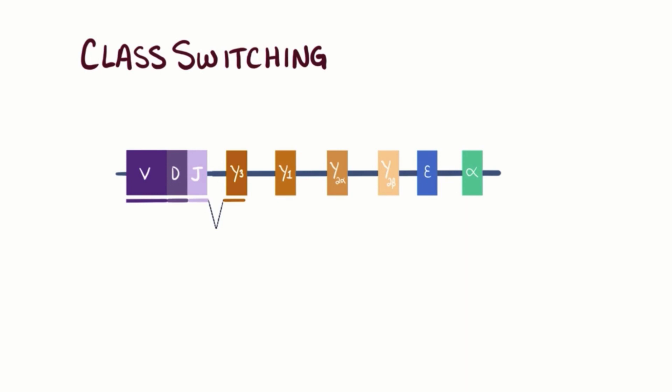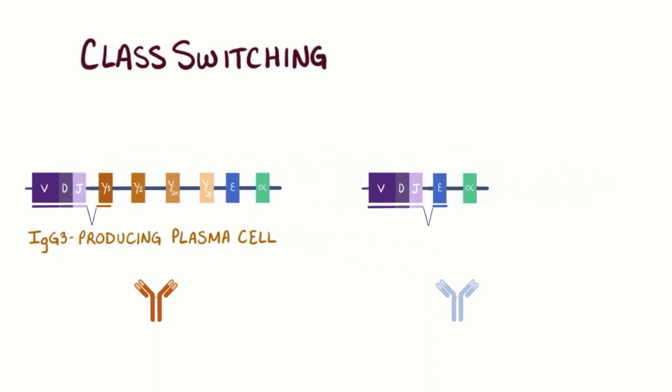If only some of the DNA is cut out, the result might be an IgG3-producing plasma cell, and if a lot is cut out, the result might be an IgE-antibody-producing plasma cell.